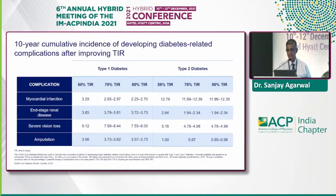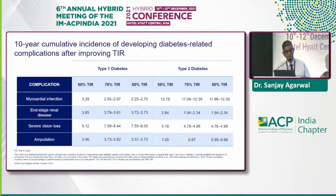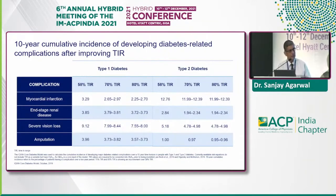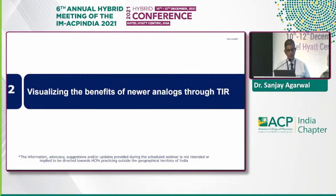Here you can see the 10-year cumulative incidence of developing diabetes-related complications after improving Time in Range. They looked at three TIR targets — 58%, 70%, and 80% — for both type 1 and type 2, across endpoints including myocardial infarction, end-stage renal disease, severe vision loss, and amputation. When comparing 58% to 70% TIR there is a very significant reduction in complications, but going from 70% to 80% shows little additional change — which is why 70% is the key cutoff point.